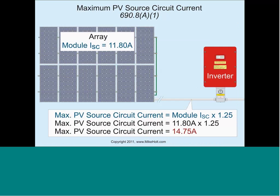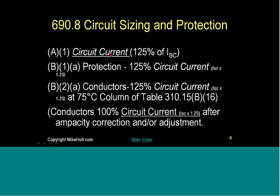Here's a summary of the calculation steps. First: calculate the circuit current — the module short circuit current times 125%. That gives you 14.75A, which is the value you use for everything. Use 14.75A × 125% to calculate your overcurrent protection. Use 14.75A × 125% to size the conductor at the 75°C terminal rating before any adjustment factors. Then after correction and adjustment factors are applied, the wire must carry 100% of the circuit current. We saw that sometimes the wire had to increase in size to satisfy all these rules.